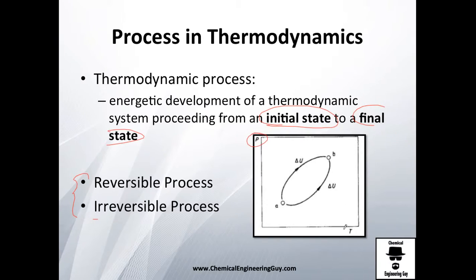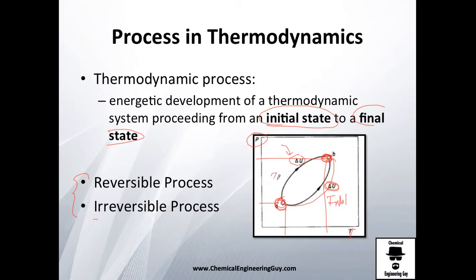For example, you have pressure and temperature — your initial state is low pressure, low temperature, and you add this property called internal energy, which we're going to see later. You finish up at a high pressure and high temperature state. That's one process. You could also start there, remove that internal energy, and finish at a lower state — that would be a second process. In thermodynamics we're going to be talking about a lot of processes: isobaric, isothermal, isovolumetric, adiabatic, isentropic, etc.